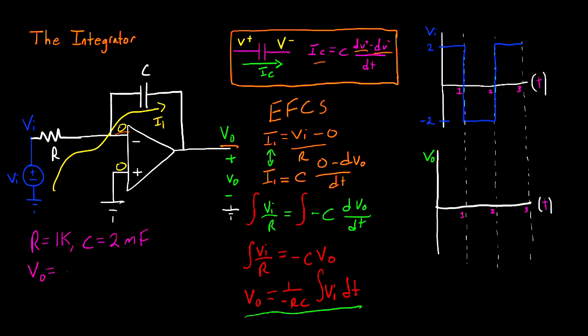My equation for VO would be negative 1 over 2 multiplied by the integral of VI DT. With these values, I now have a definition of VO for a given VI. So now let's take this VI and calculate our VO.